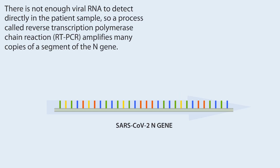There is not enough viral RNA to detect directly in the patient's sample, so a process called Reverse Transcription Polymerase Chain Reaction, RT-PCR, amplifies many copies of a segment of the N-gene.